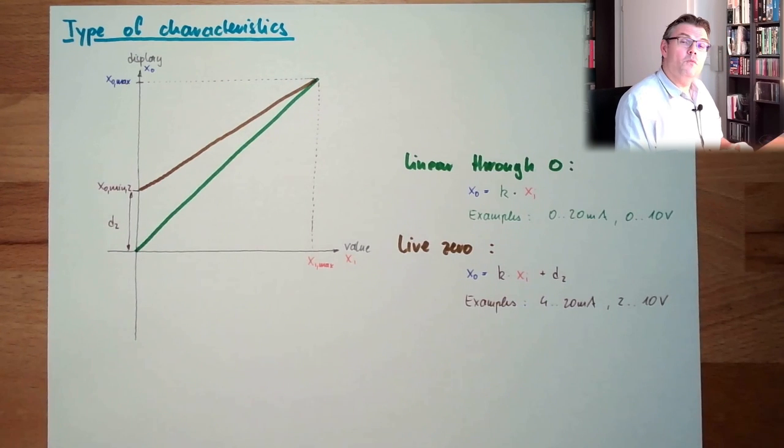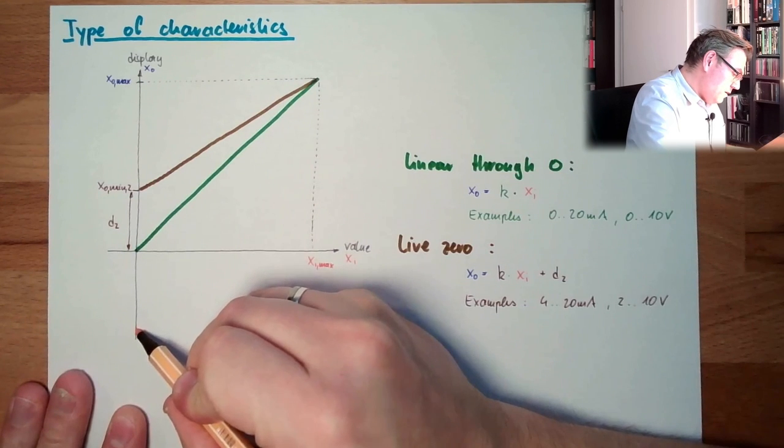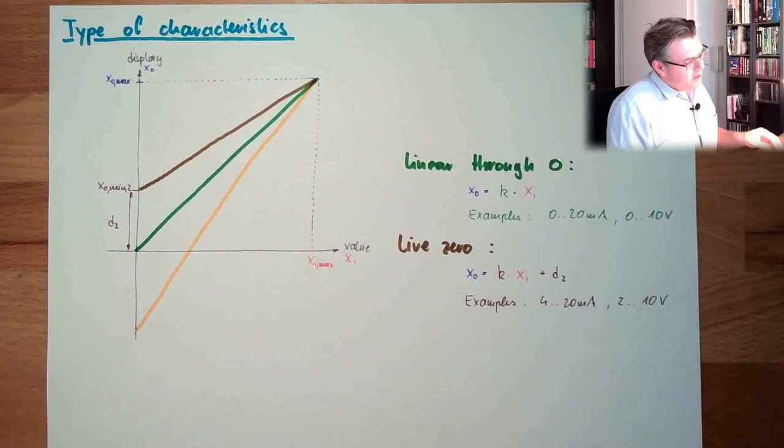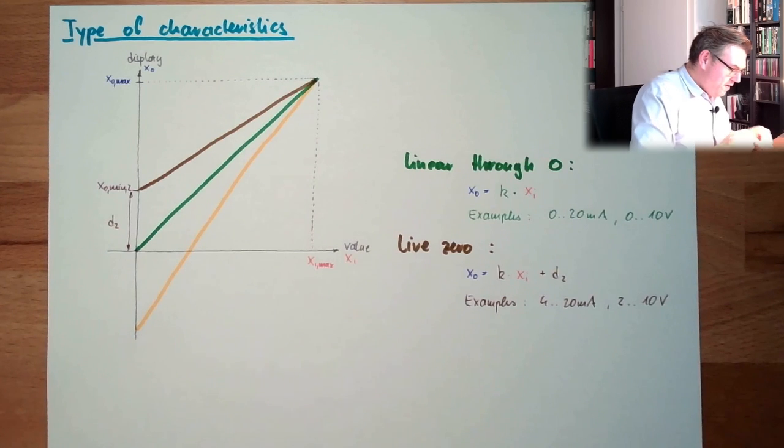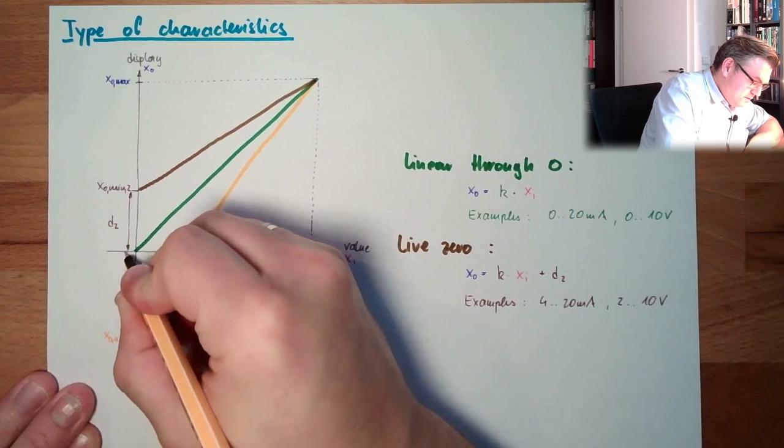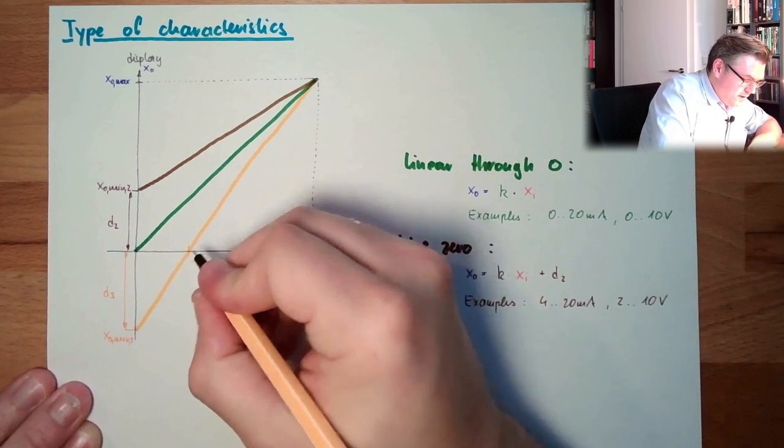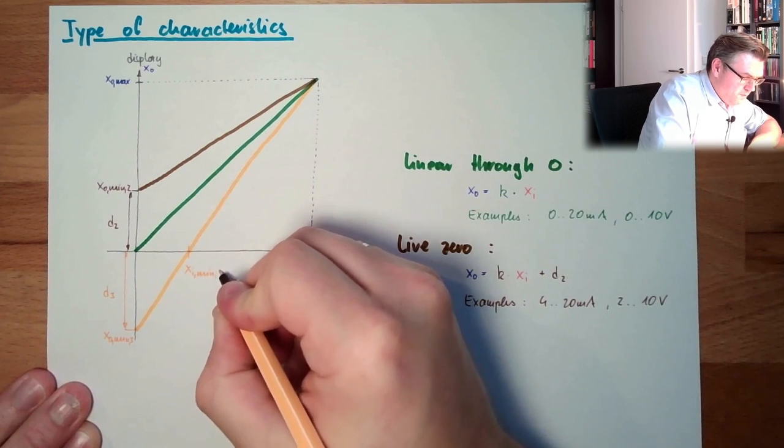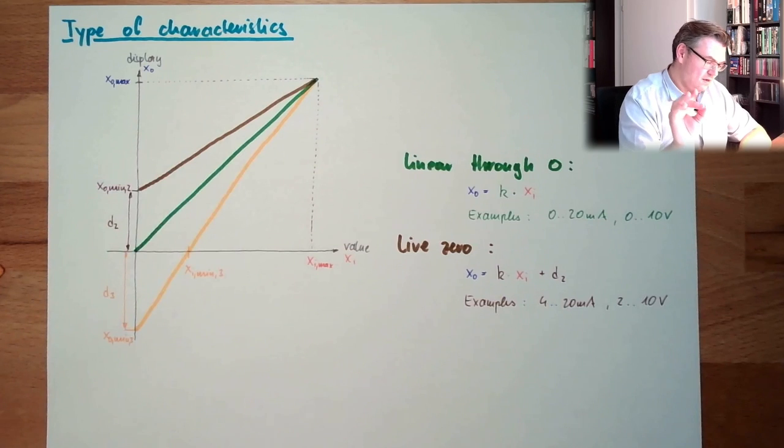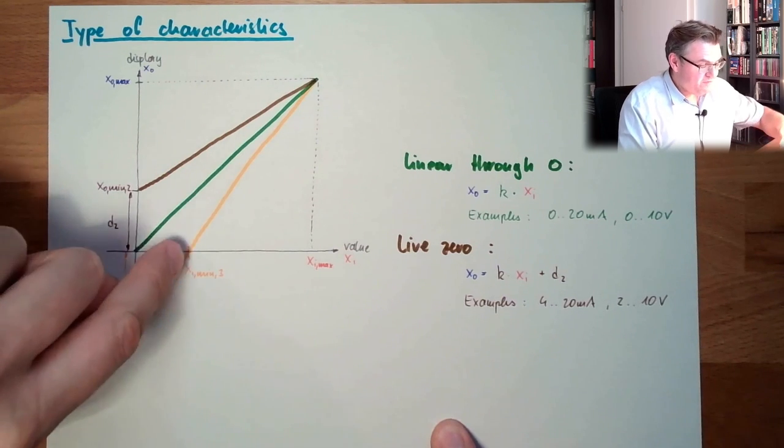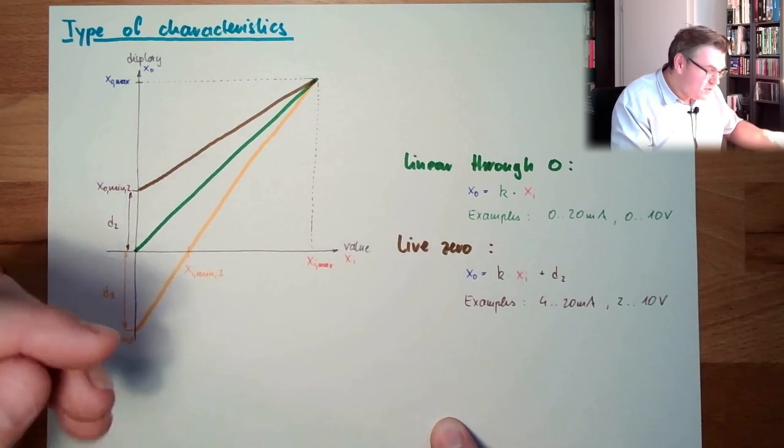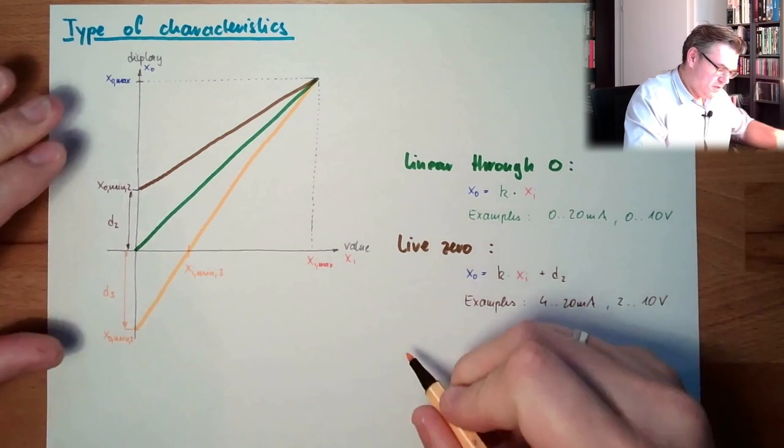And then we have the other way around. We're starting here somewhere, going up. Should also be linear. Here we have XO min 3. This here is D3. And here we have XI min 3. What does this mean? This means, to get an output of this, the value must already have reached this level. So the value is not starting at zero, the value is starting at a minimum. And then we start to display something. This is called suppressed zero. Linear suppressed zero.